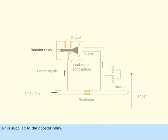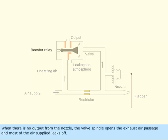Air is supplied to the booster relay. When there is no output from the nozzle, the valve spindle opens the exhaust air passage and most of the air supplied leaks off.